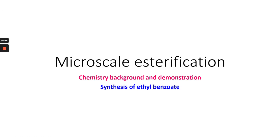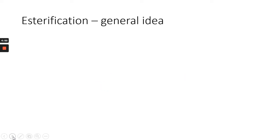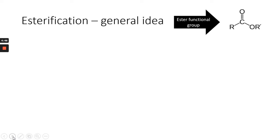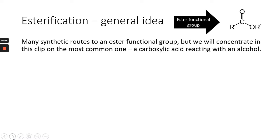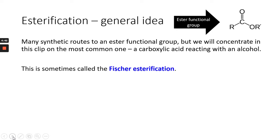Hello, welcome to this micro-scale esterification synthesis of ethyl benzoate. We're going to look at the background chemistry first of all. Starting with the idea of an ester — we're creating the ester functional group. There are lots of ways to do this, but we'll concentrate on the Fischer esterification, which is the most common one, using a carboxylic acid and an alcohol.